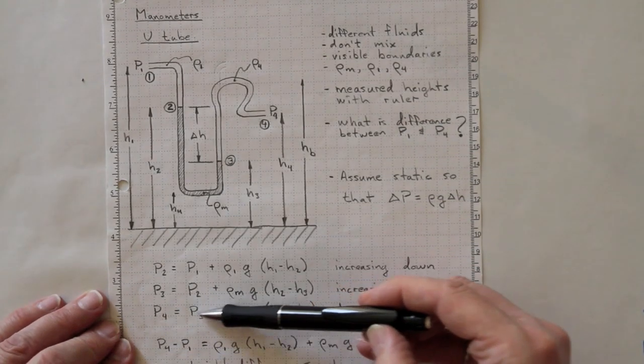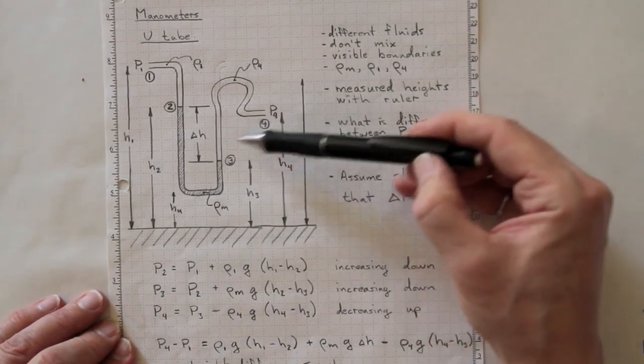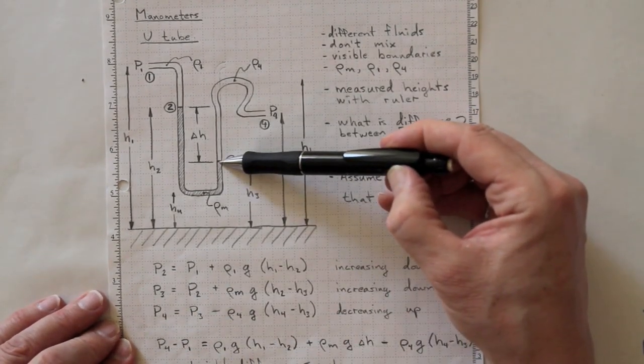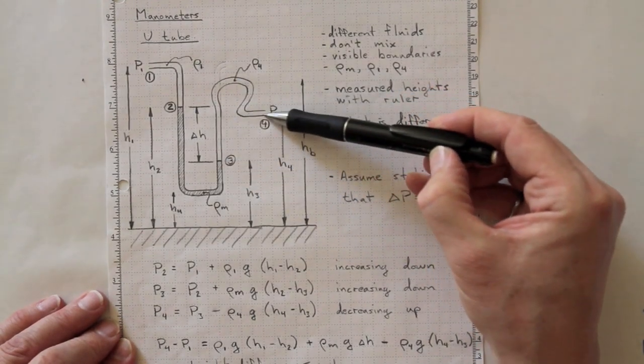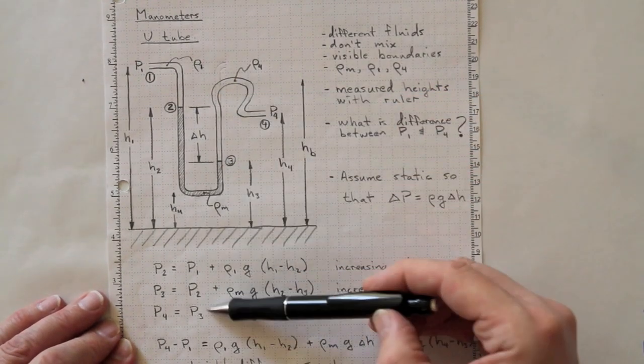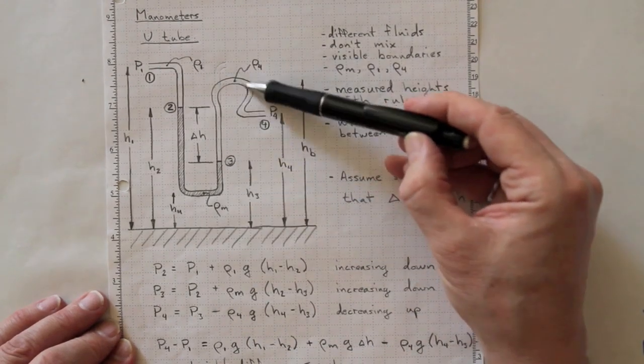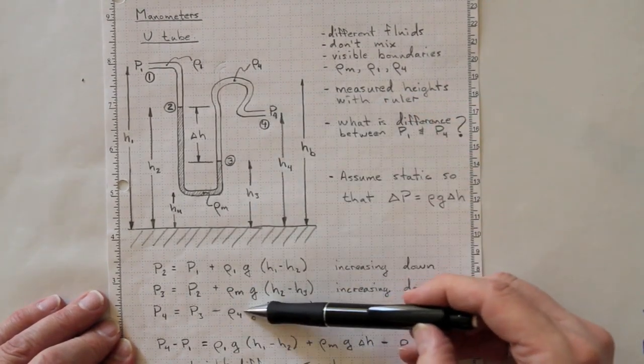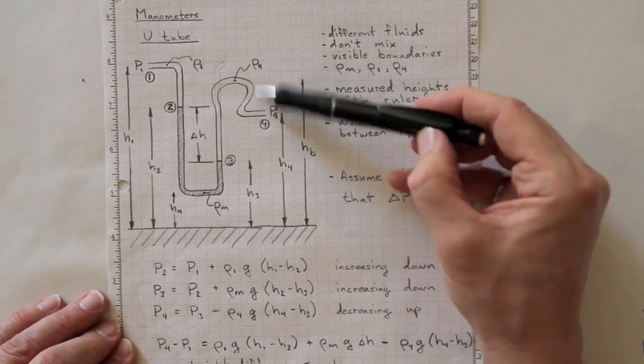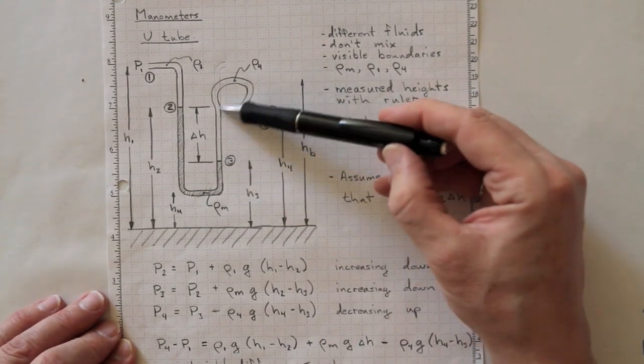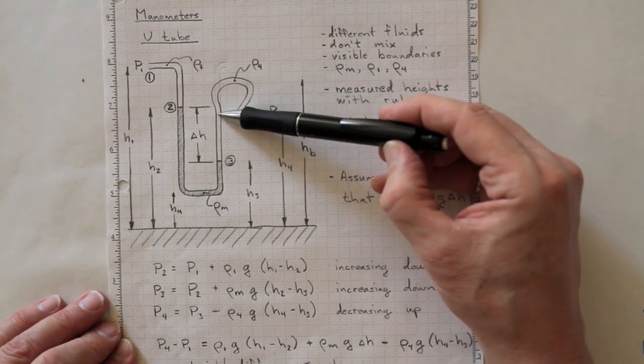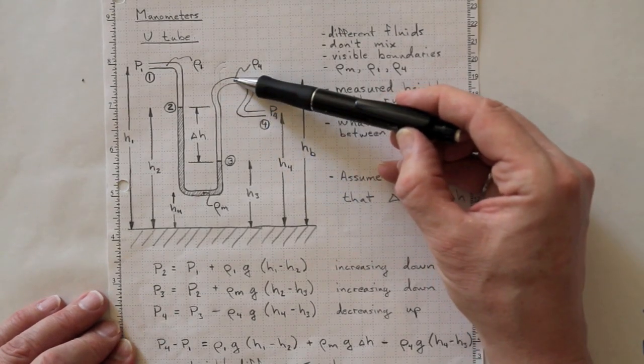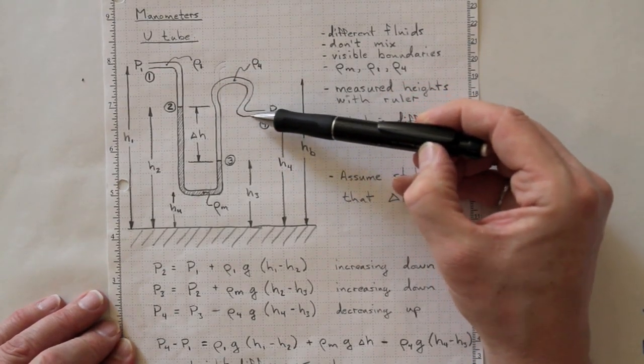Then finally, P4 will be equal to P3 minus a value for the increase in elevation, so minus rho 4 times G times H4 minus H3. And the height of this rise up here doesn't matter because the pressure decreases as we go up and then increases again as we go down.